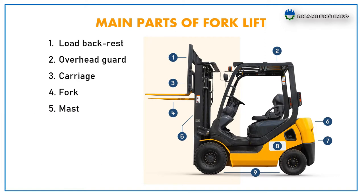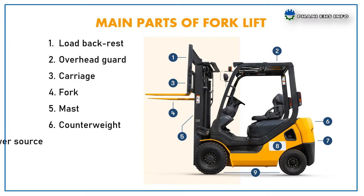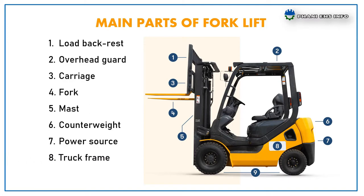The mast: the mast rises and lowers the load; it also has interlocking rails that provide horizontal control. Counterweight: this weight is used to stabilize the forklift and keep it from tipping over. Power source: forklifts can be powered by fuel cells, propane gas, gasoline, diesel engines, or batteries.